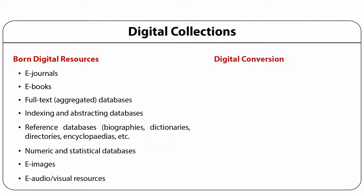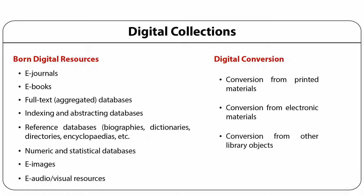The second category is converted from printed materials including rare books, printed theses and dissertations, printed articles, archived journals, etc. Converted from electronic materials such as video, audio tapes, films, microfilms, etc. Conversion from other library objects such as archival objects converted into digital objects.